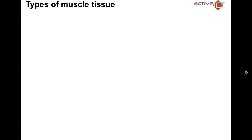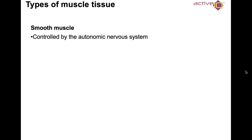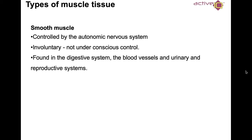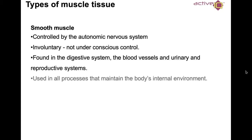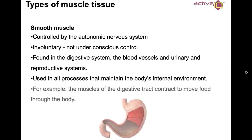Let's break it down in a little bit more detail. Smooth muscle is controlled by the autonomic nervous system — something we'll go into much more detail on later. It's involuntary, not under our conscious control, and is found in the digestive system, blood vessels, and urinary and reproductive system — essentially all processes that maintain the body's internal environment. For example, the muscles of the digestive tract contract to move food through the body.